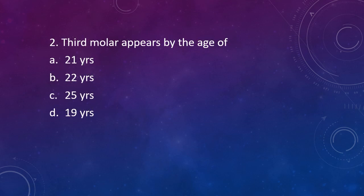Question 2. Third molar appears by the age of: Option A - 21 years, Option B - 22 years, Option C - 25 years, Option D - 19 years. The correct answer is Option A, 21 years. This is an important data which is often utilized by forensic experts to find out the age of the criminals that come to them.